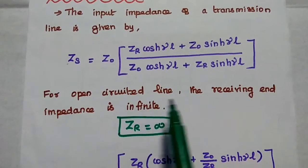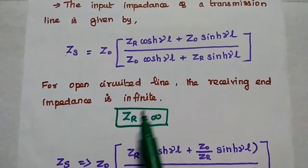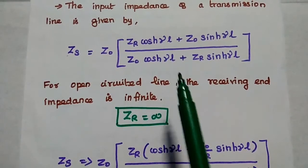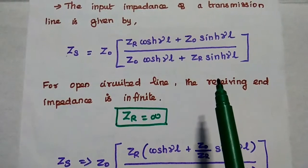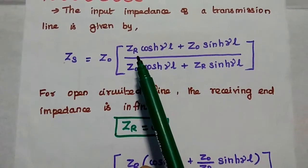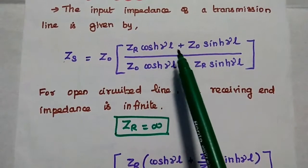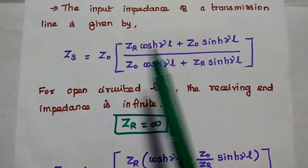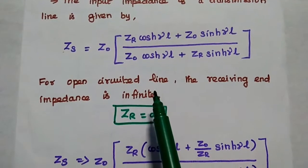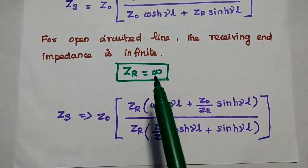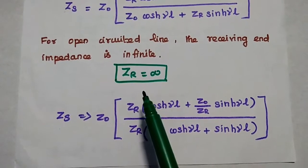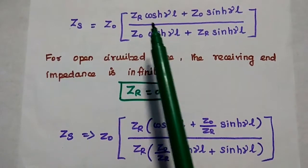For the open circuited line, the receiving end impedance is infinite. If you substitute this value in the expression, the answer becomes infinite, because ZR equal to infinite makes that term infinite, and infinite plus anything becomes infinite. Then the input impedance becomes infinite. But it is not practically possible. So for that, what we are going to do is simplify this expression by taking ZR outside.